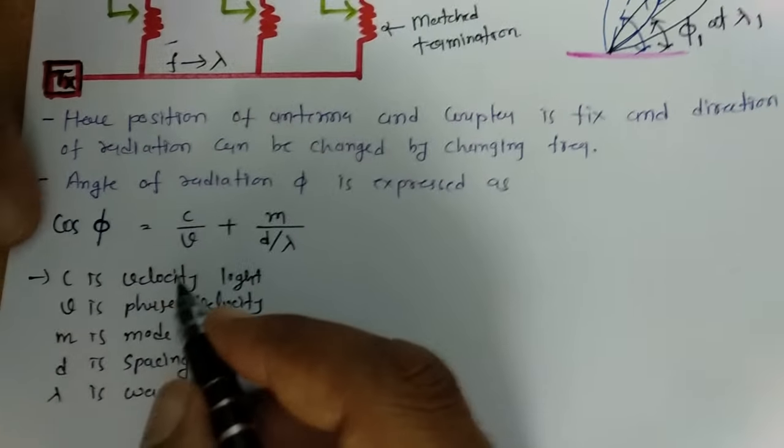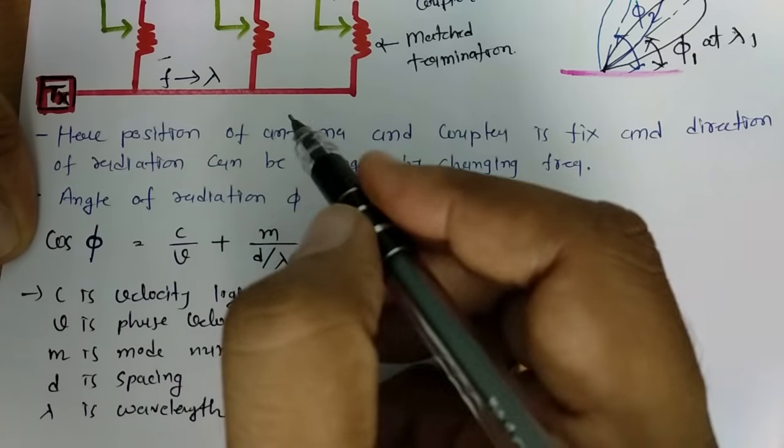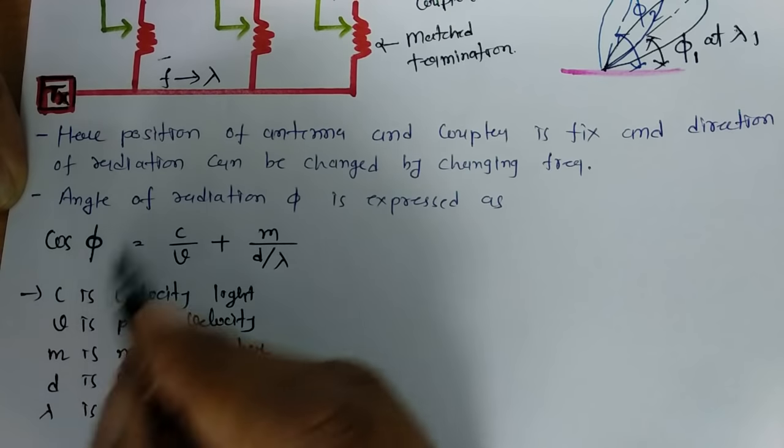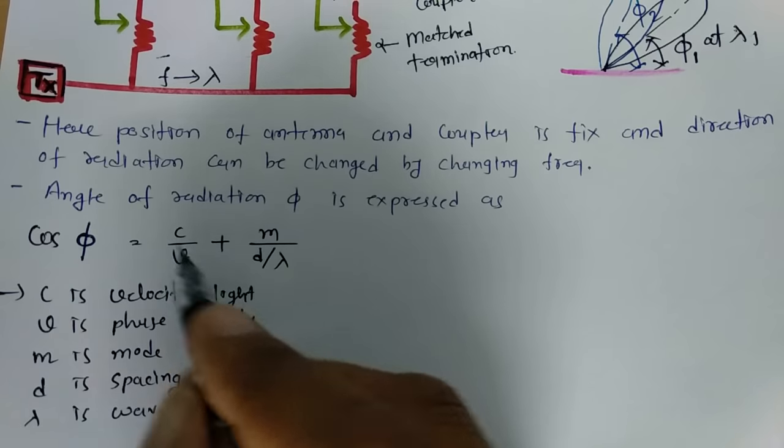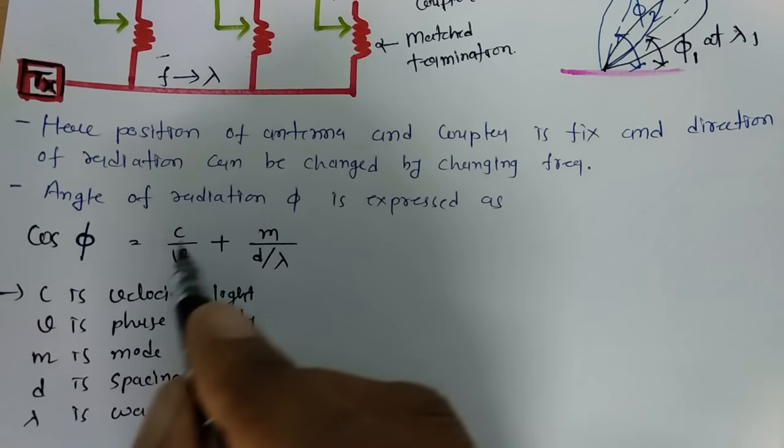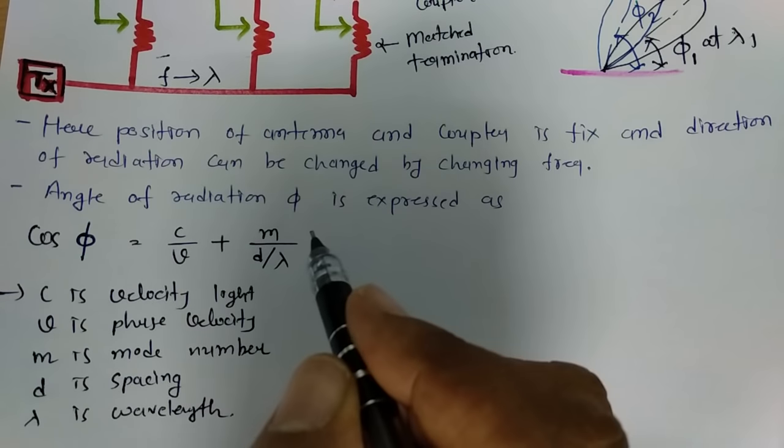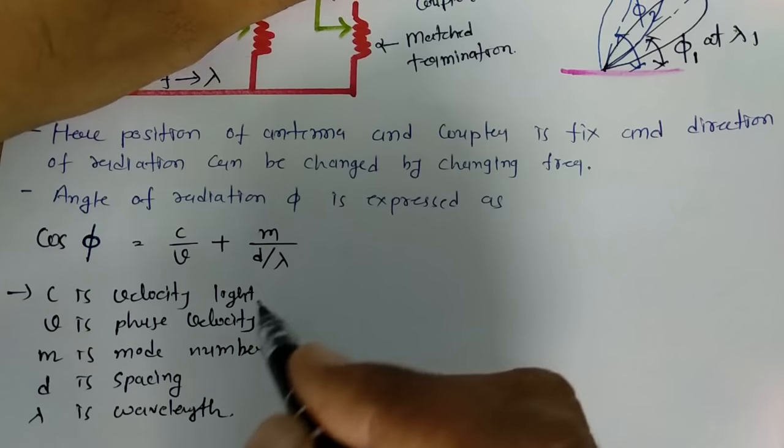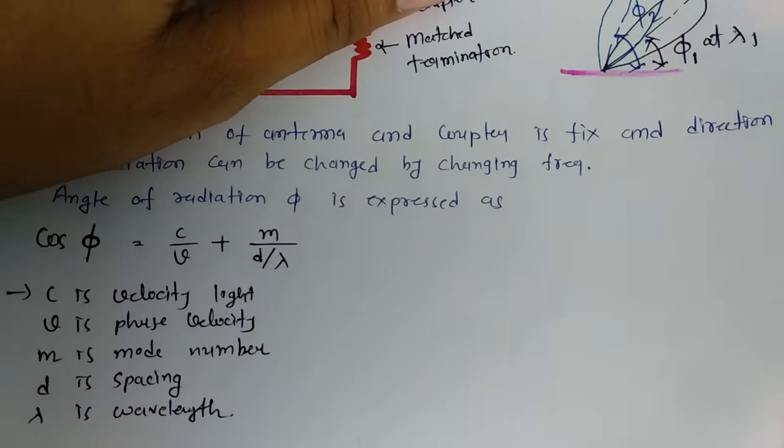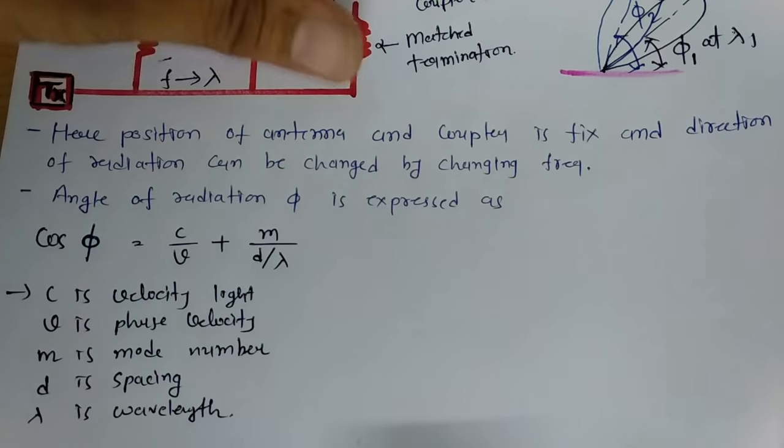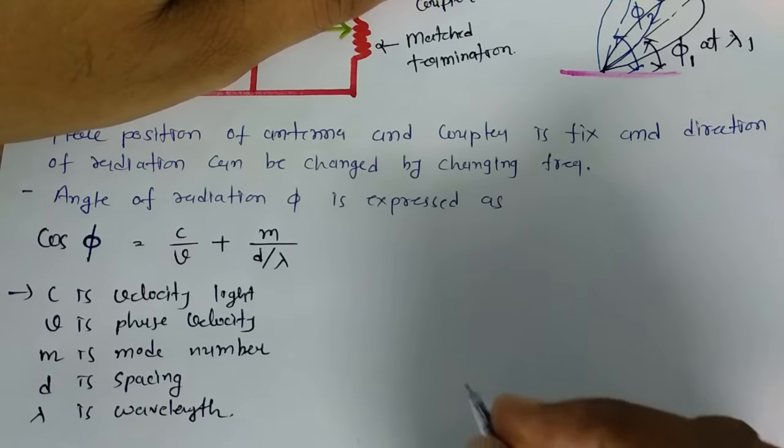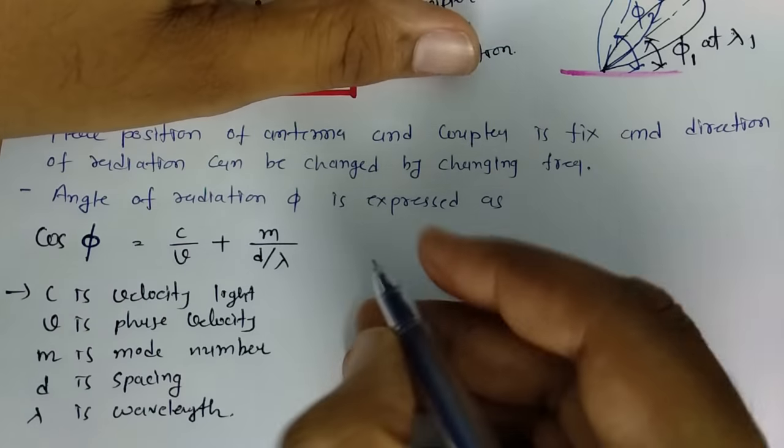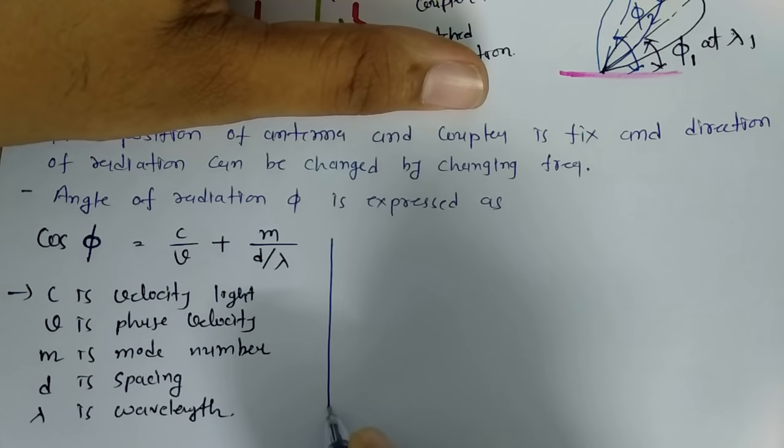For this particular case of array, this radiation of phase that is happening at phi and cos(φ) = C/V + M/(D/λ). This formula will be helping you to understand how angle of beam could be steered. Let us consider one example so it will be more clear.